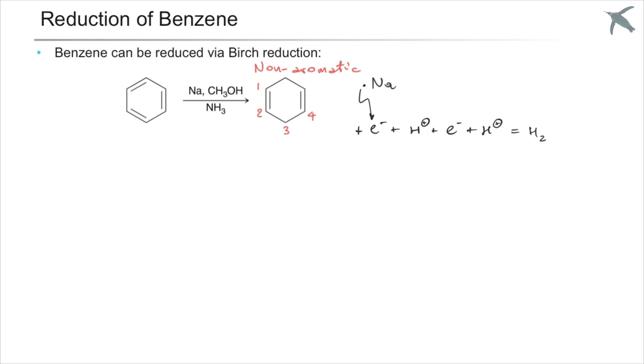The source of electrons, the reducing agent, is the sodium metal, but we also need a source of protons. Ammonia is not acidic enough, so that's why methanol is in there.